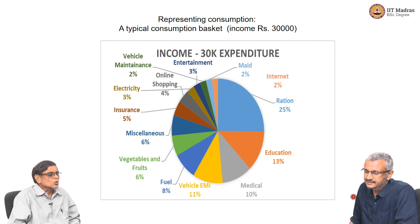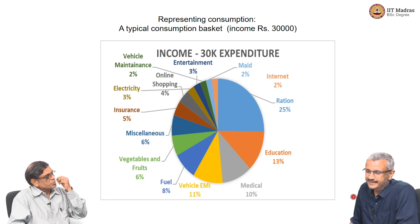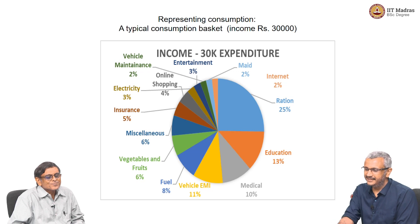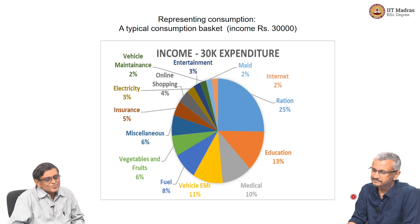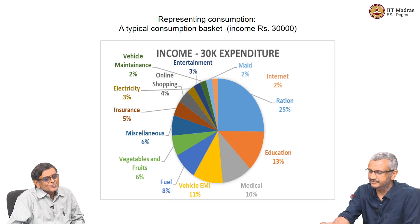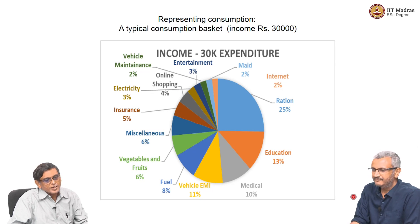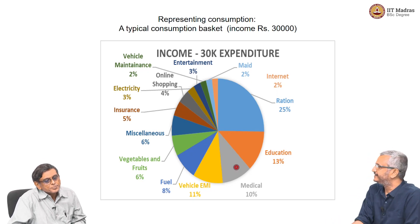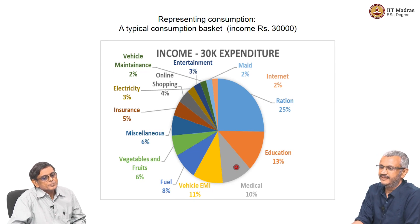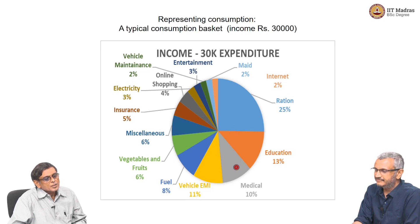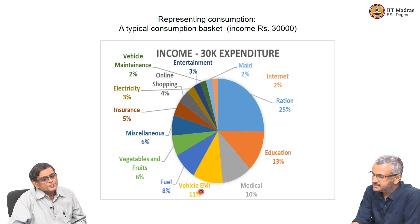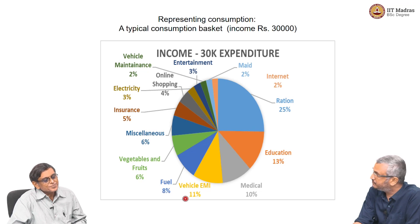Now let us look at the household with 30,000 rupees. This gives another very interesting picture. Here we are not seeing rent as a major item — the previous household had 41 percent on rent, but this one has no rent at all, which means they are staying in their own house. In contrast, we find that education is a little more, so they are able to spend more on education. Medical is also slightly more. They have purchased a vehicle on loan, so EMI is taking 10 percent of their total income.